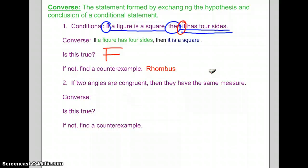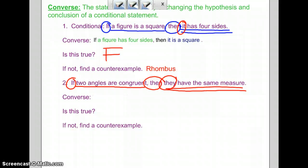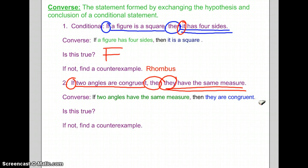Number two. If two angles are congruent, our hypothesis, then they have the same measure, our conclusion. Don't forget, when we rewrite this converse, we do not want to have they in our hypothesis. If two angles have the same measure, then they are congruent. Notice how we eliminated the word they and rewrote it. If two angles have the same measure, then they are congruent.